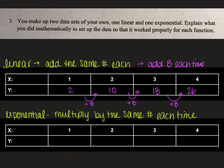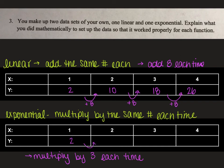For exponential, it's almost the same: choose a value to start at and a number to multiply by. I'll start at 2 and multiply by 3. So 2 times 3 gives 6, times 3 gives 18, times 3 gives 54. There I have an exponential function where I chose the starting number and the number I multiplied by.